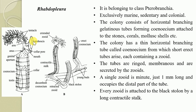Every zooid is attached to a black stolon by a long contractile stalk, as seen in this diagram. The number of zooids are attached to the black stolon, and they are withdrawn into the coenoecium with the help of the contractile stalk. These are the characteristic features of the second example belonging to Hemichordata, belonging to class Pterobranchia, that is Rhabdopleura.